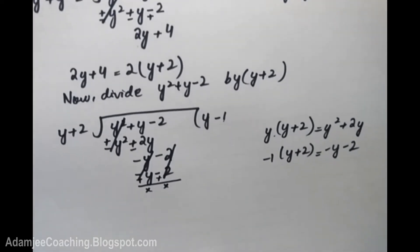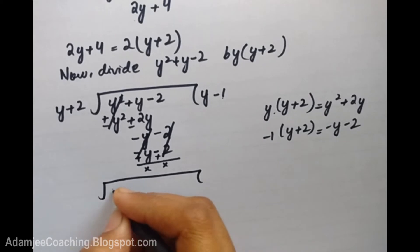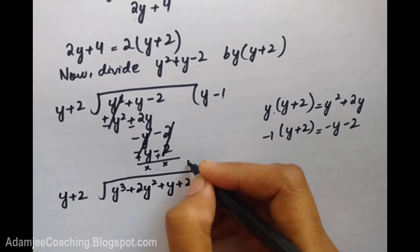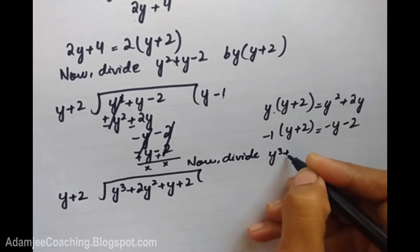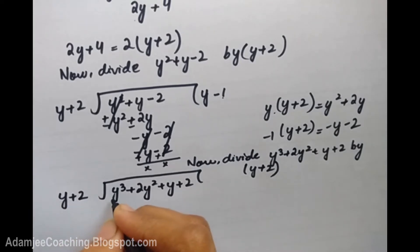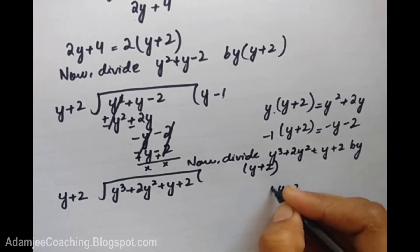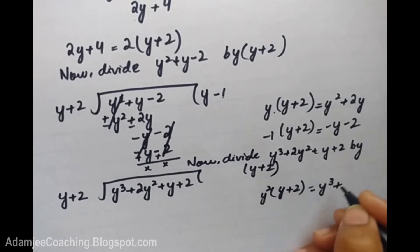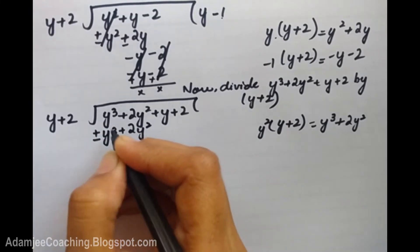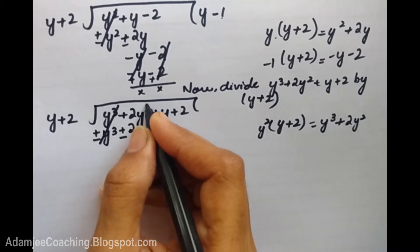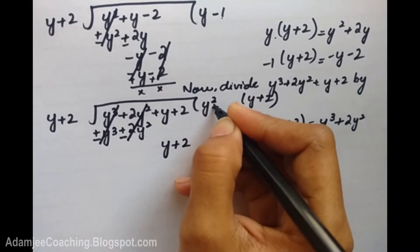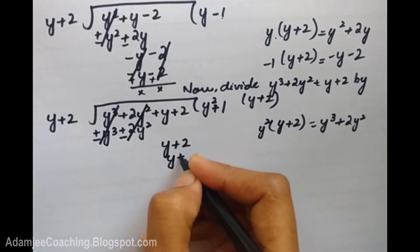Now for the third polynomial, we start a new division box. We write y³ + 2y² + y + 2 as the dividend and y + 2 as the divisor. Dividing y³ by y gives y², and multiplying y + 2 by y² gives y³ + 2y². After cancellation, we are left with y + 2.